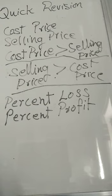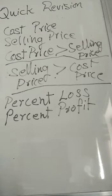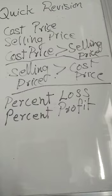And also with wholesale dealers — shopkeepers buy things from wholesale dealers and sell them at a bigger price in their shops. In those cases too, we can find the profit or the loss. So with that, this chapter is done, and now we'll learn the next chapter.